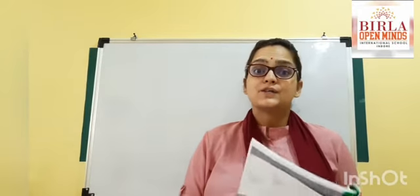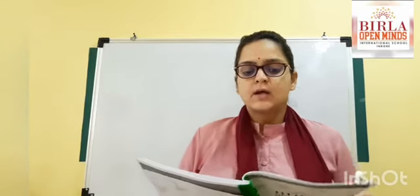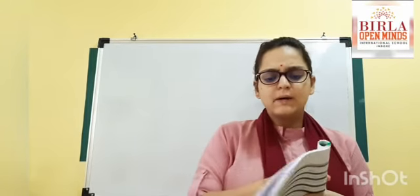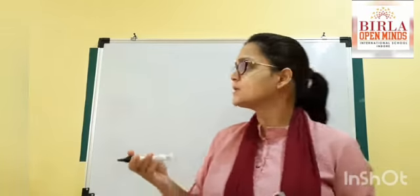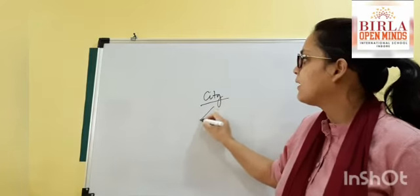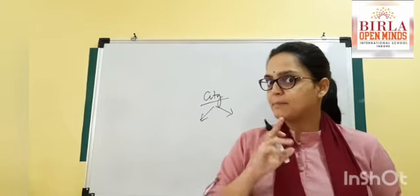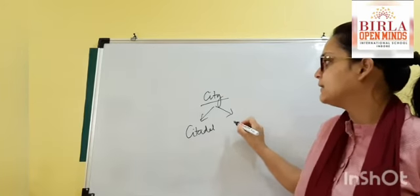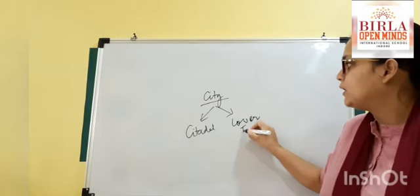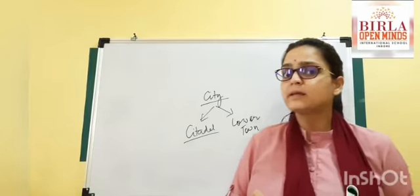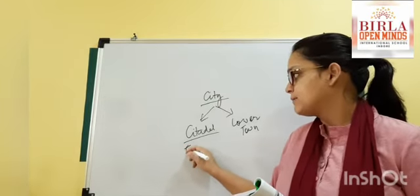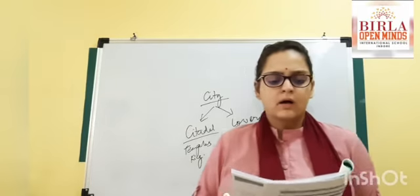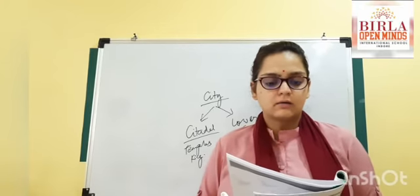Good morning! Today let us continue with the Indus Valley civilization. We will be talking about the life of people of the Harappan and Indus Valley civilization. The city was divided into two parts: the upper part called the Citadel, and the lower town. In the Citadel there were temples and the king's palaces — the king lived there.